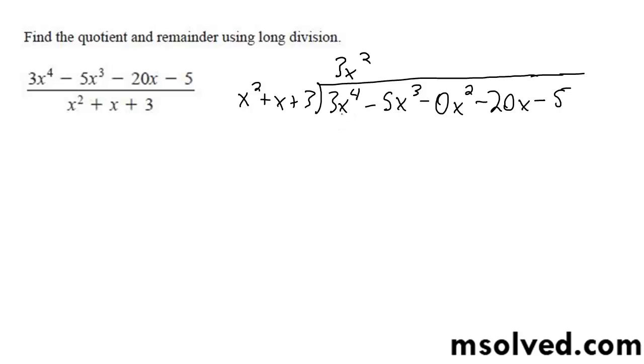And we're going to get 3x to the 4th plus 3x to the 3rd plus 9x squared. Switch the signs, so we're going to get minus 8x to the 3rd, minus 9x to the 2nd is 28x.